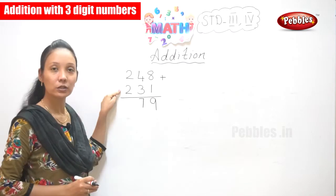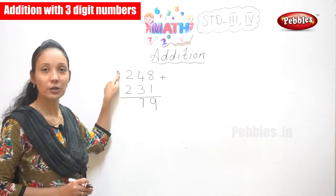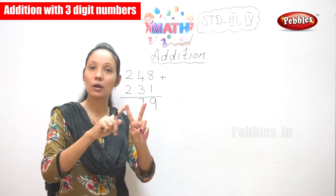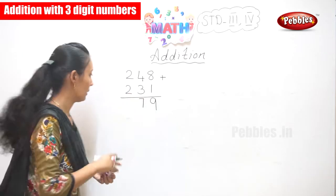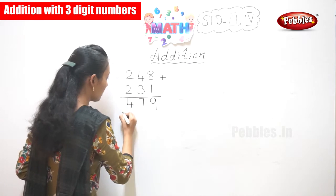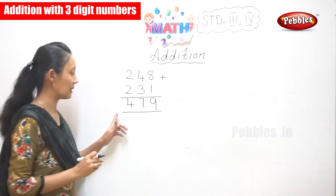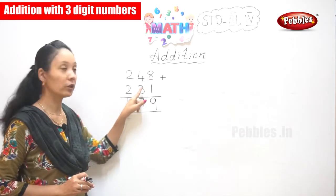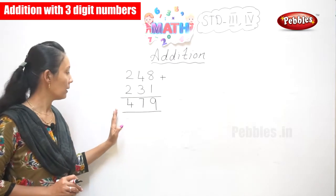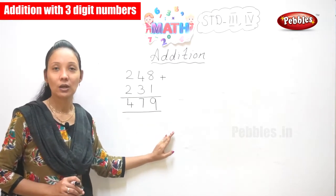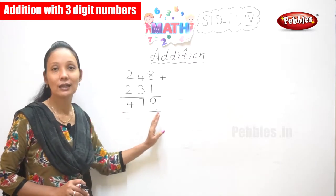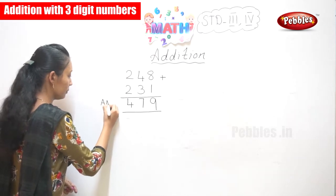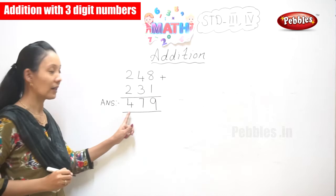Now, next you have 2 plus 2 — both the same numbers. So your answer is 479. This is your answer: 479.